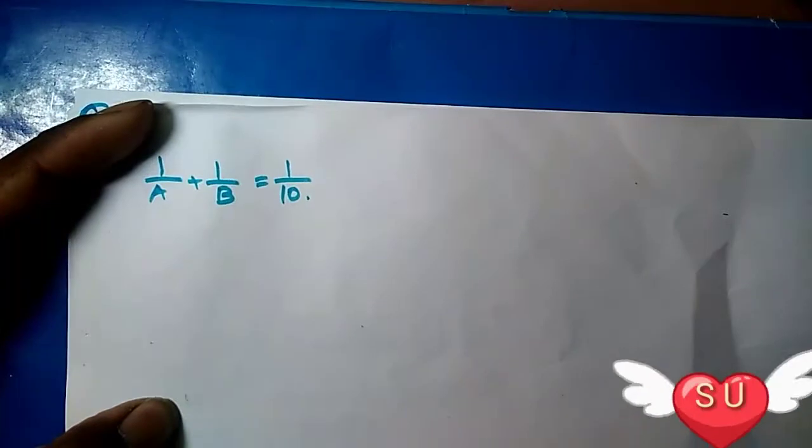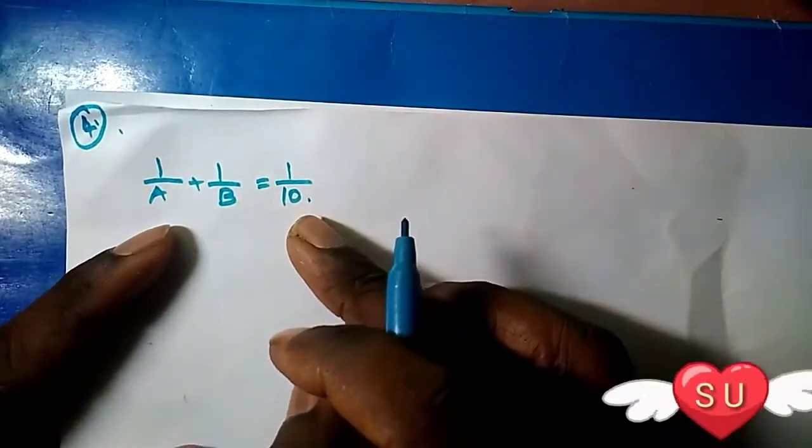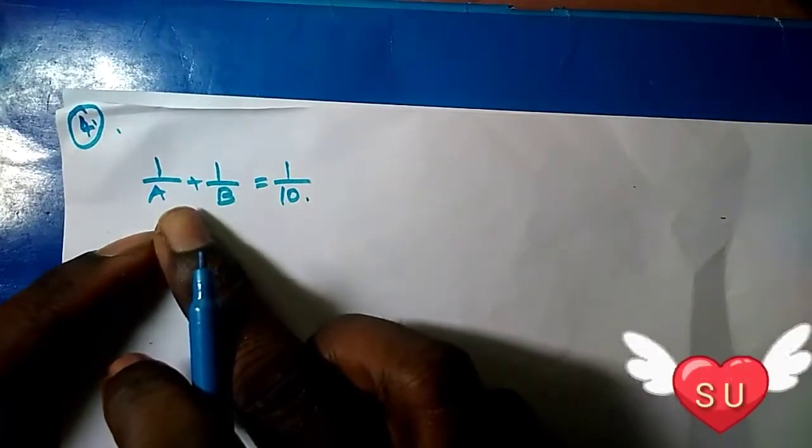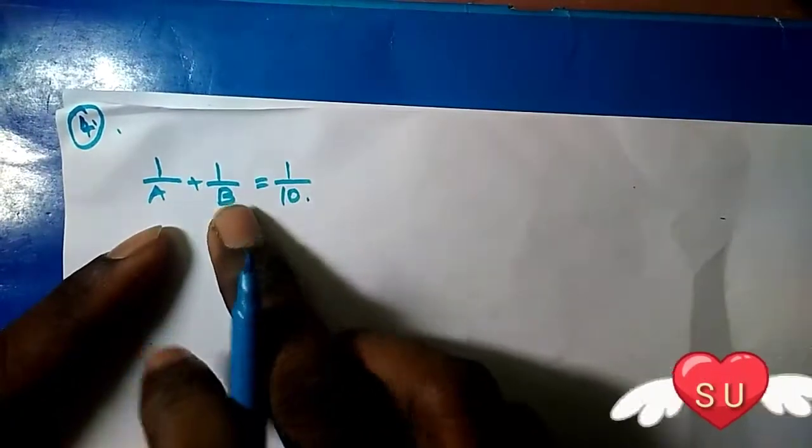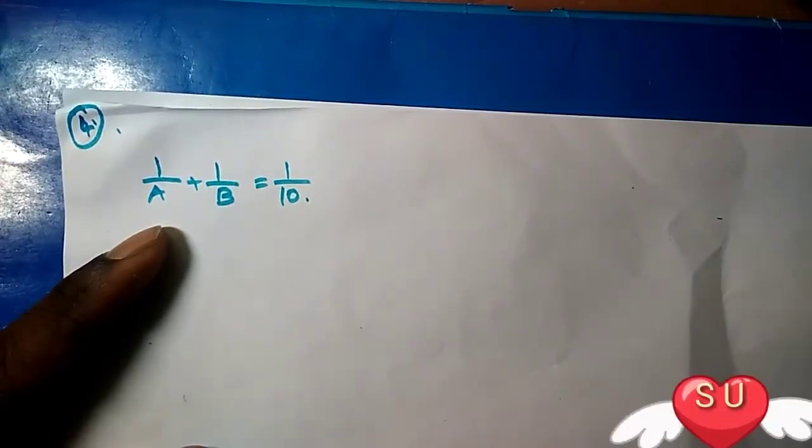This is the time and work method. So pump A and pump B together take 10 minutes to fill the fish tank.